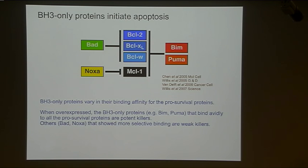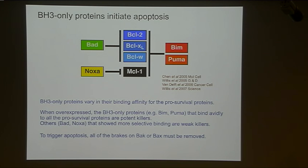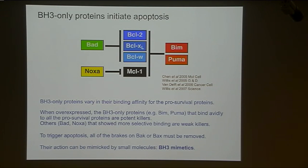Together, principally with Jerry and his lab, we went on over a period of years to exploit this system to understand how the interactions between these proteins determine whether a cell lives or dies. What is important from that work is that we showed that in order for efficient cell killing to occur, you essentially need to take out most, if not all, the brakes on the cells that maintain survival. This was important in terms of thinking about how we might use small molecules to trigger cell death by antagonizing the pro-survival proteins — that class of molecules known as the BH3 mimetics.